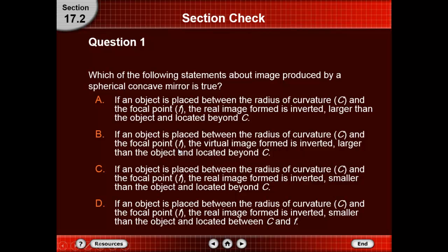Now let us check our lesson. Which of the following statements about the image produced by a spherical concave mirror is true? Option A: if an object is placed between the radius of curvature and the focal point, the real image formed is inverted, larger than the object, and located beyond C. Option B: if an object is placed between the radius of curvature and the focal point F, the virtual image formed is inverted, larger than the object, and located beyond C.